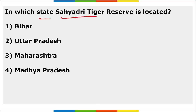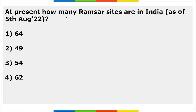In which state is Sahyadri Tiger Reserve located? It is located in Maharashtra. Recently, the National Board for Wildlife allowed drilling investigation in the Sahyadri Tiger Reserve, which experiences high seismic activity due to the Koyna Dam.